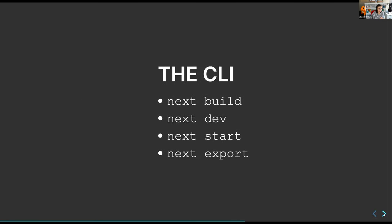The CLI is similarly simple. There's `next build` which builds your site, `next dev` which runs a development server, `next start` which runs a production server, and `next export` which exports your entire Next.js application as a static site. Typically you'll run `next dev` yourself, and your host — whether Netlify, AWS Amplify, Vercel, or others — will handle build, start, and export.